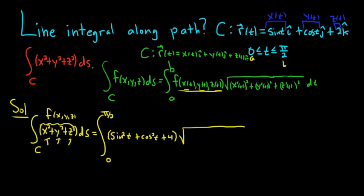We have a big square root. So what's x prime? If x of t is sine t, x prime of t is cosine t. So it'll be cosine squared t. The derivative of cosine is negative sine. So y prime of t is negative sine of t. So it's being squared, though. So when you square it, it's going to become positive. So it's just sine squared.